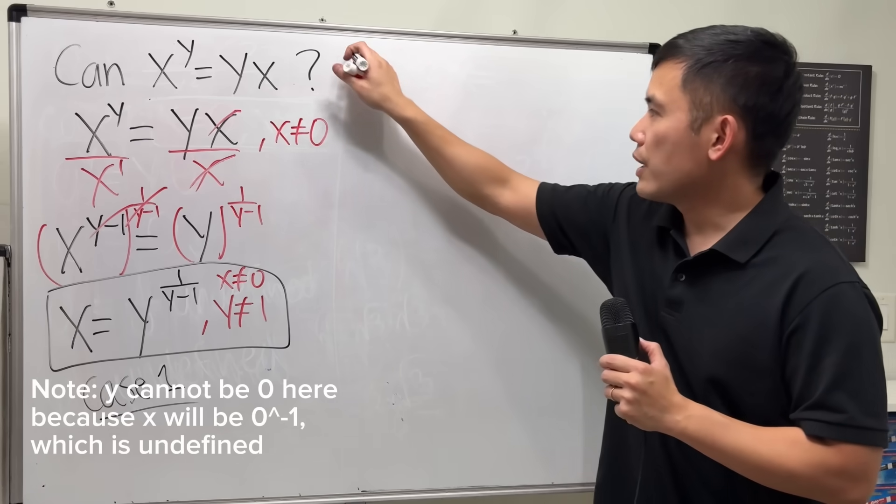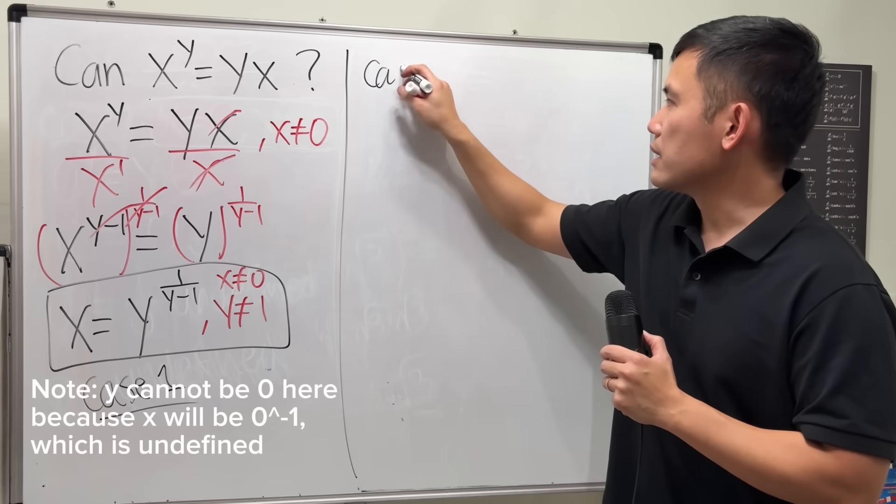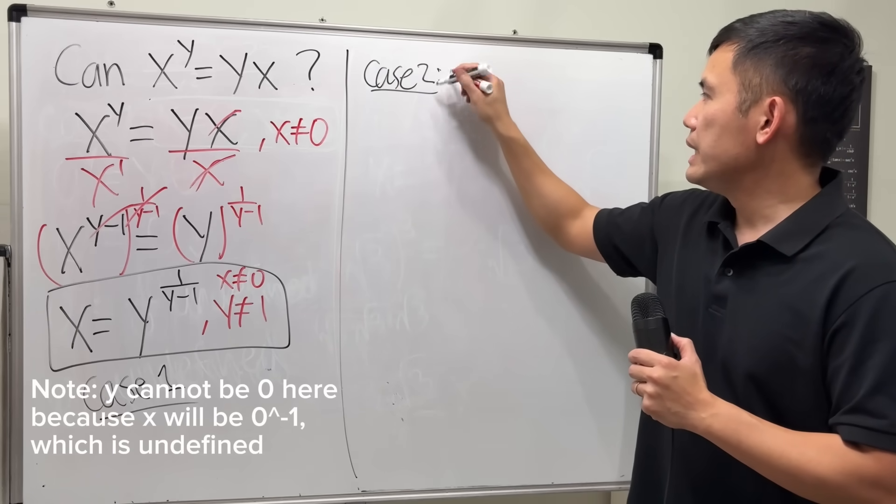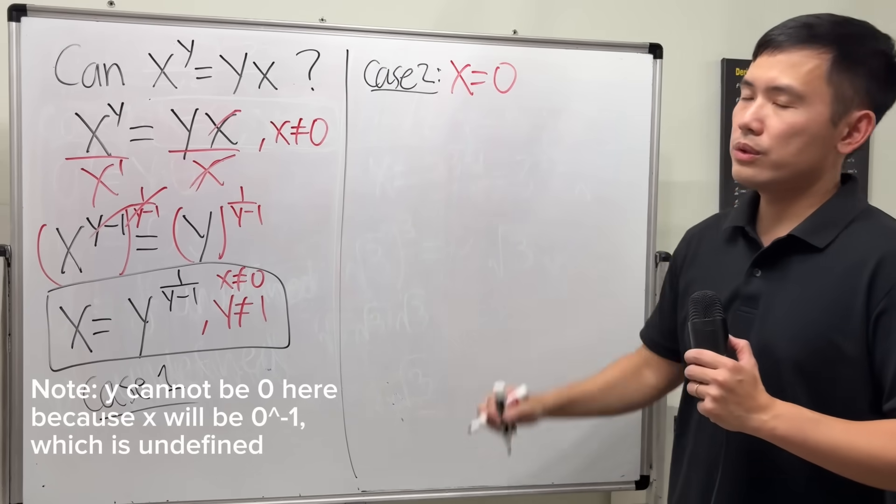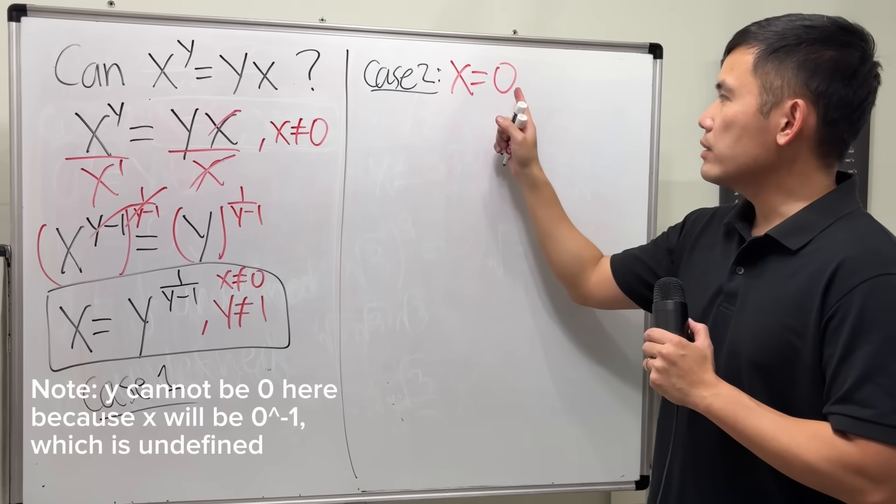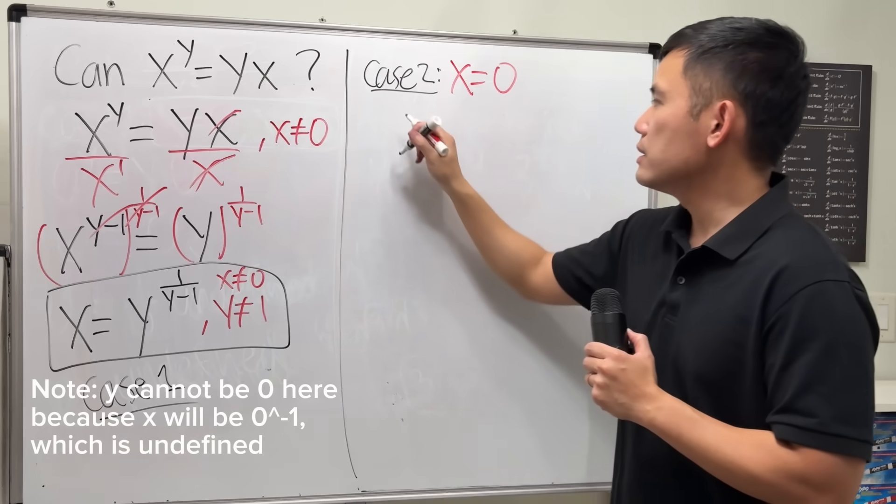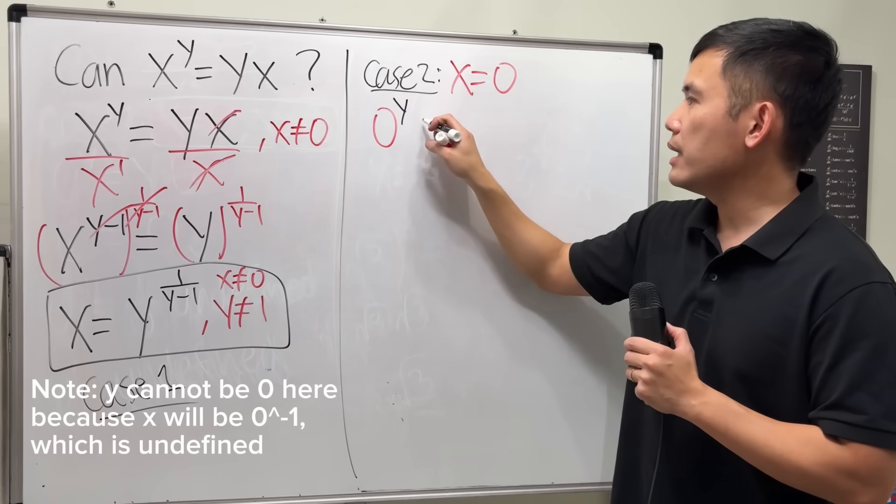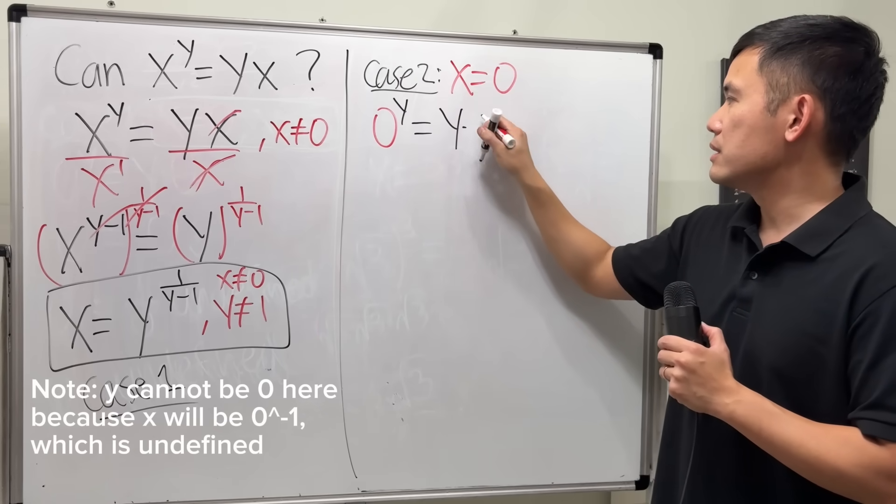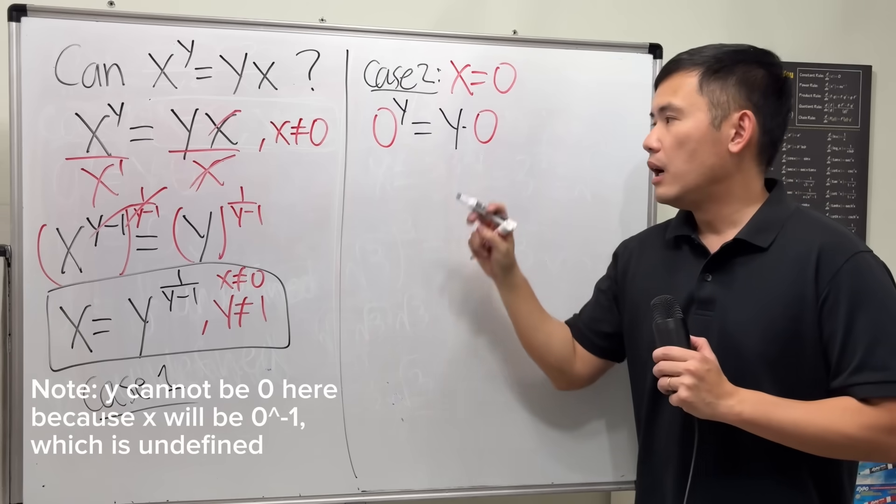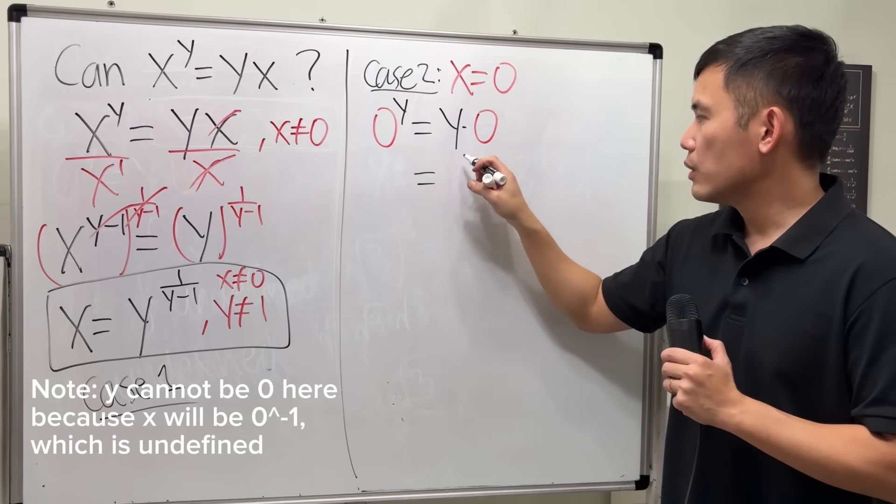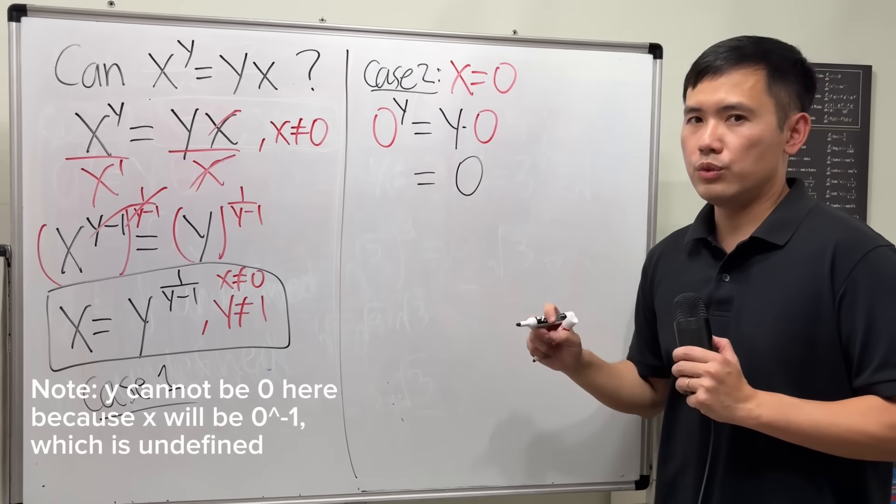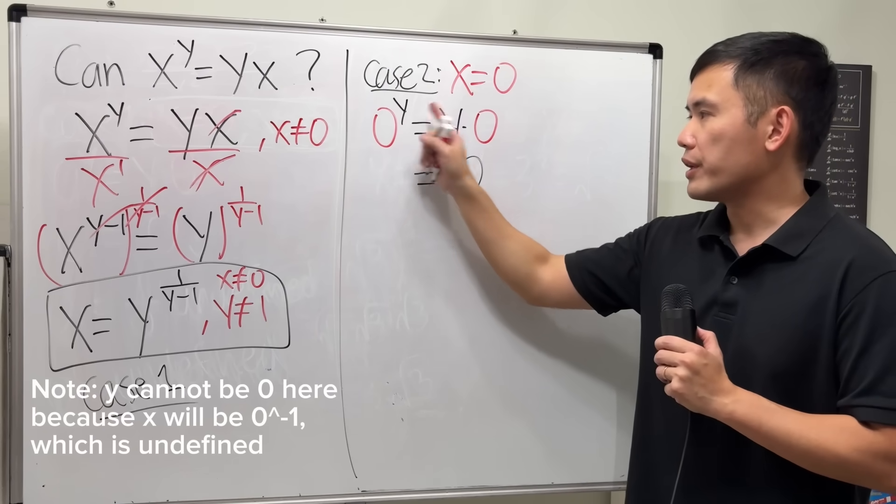So now, we are going to consider the case that if x is equal to 0. To work this out, I will plug in 0 into all the x's. So we get 0 to the y being equal to y times 0. On the right-hand side, y times 0 is always equal to 0. That's for sure. But we have to be careful right here, because y is in the exponent.